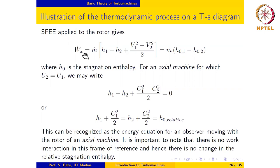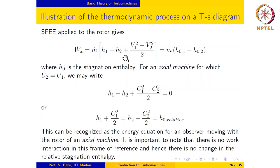The steady flow energy equation applied to the rotor led to an expression where, looking at the terms inside the square bracket, there are basically two effects that cause work transfer to the rotor — whether it is power produced by the rotor or power being supplied to the rotor. There is a change in enthalpy and there is a change in specific kinetic energy of the fluid. So these two effects cause the work transfer to the rotor.